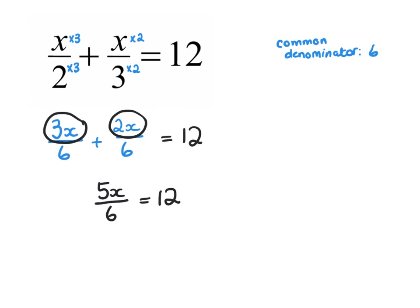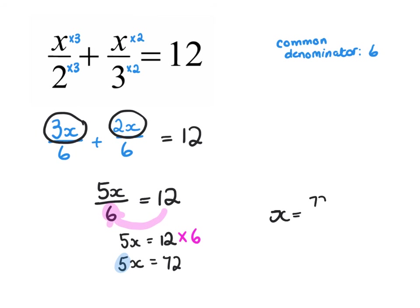Now it's a normal equation. Dividing by 6 working forwards means multiplying by 6 working backwards: 12 multiplied by 6 equals 72, so 5x equals 72. Then multiplying by 5 working forwards means dividing by 5 working backwards: x equals 72 divided by 5, which is 14 and 2 fifths, or 14.4.